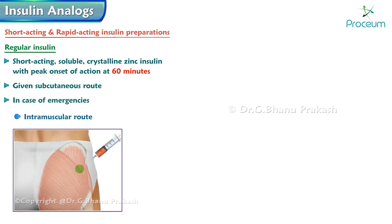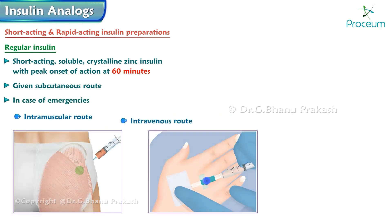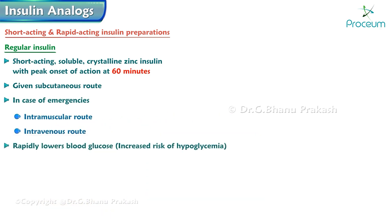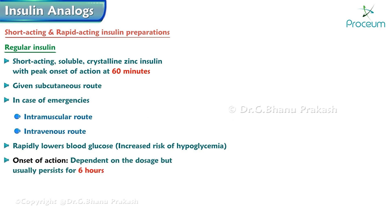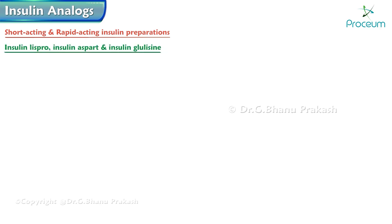Regular insulin is usually given subcutaneously but can be given intramuscularly or intravenously in cases of emergencies. It rapidly lowers blood glucose and hence has an increased risk of hypoglycemia. The duration of action is dependent on the dose but usually persists for six hours.